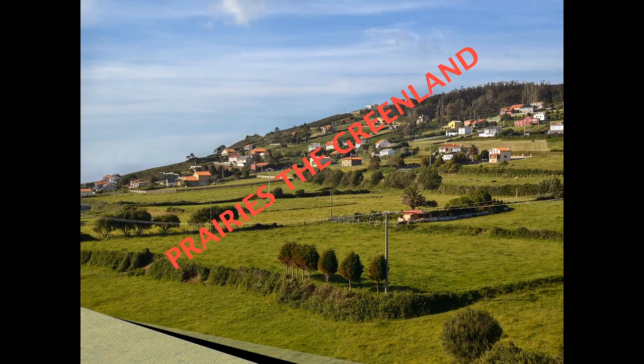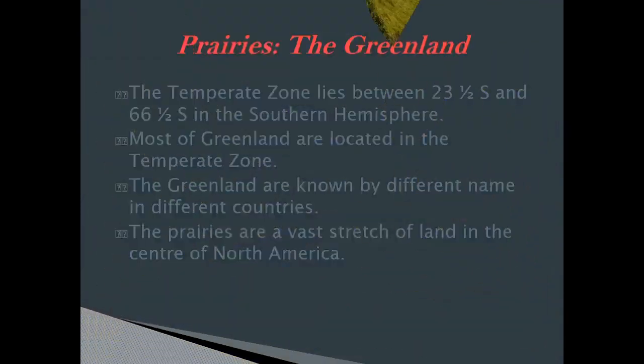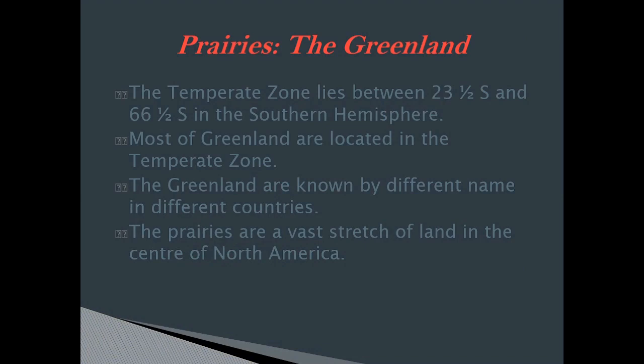Prairie is the green land. The temperate zone lies between 23 and a half south and 66 and a half south in the southern hemisphere. Most of the green lands are located in the temperate zone.